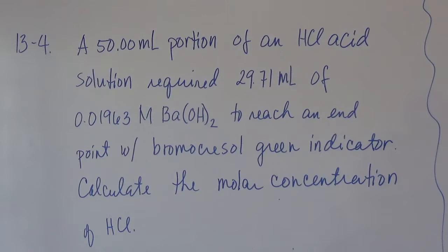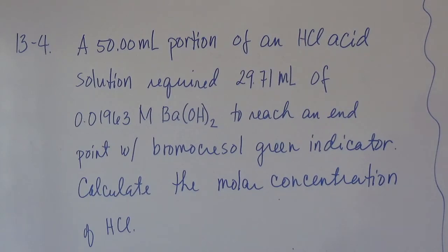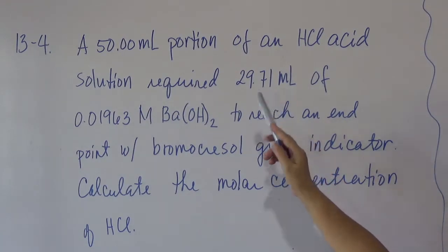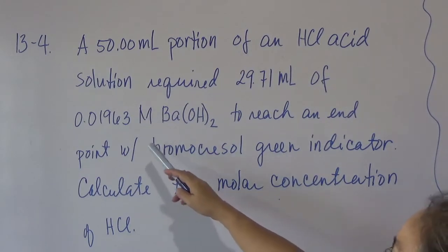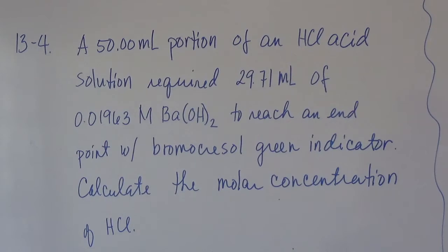This is a titration problem. We are given a 50 ml portion of hydrochloric acid solution that required 29.71 ml of 0.01963 molar barium hydroxide to reach an end point. The indicator being used is bromocresol green.